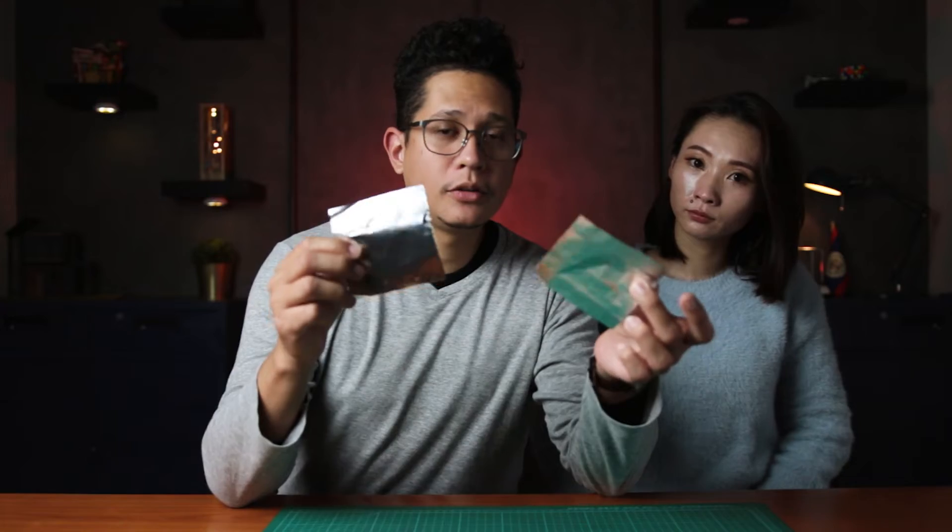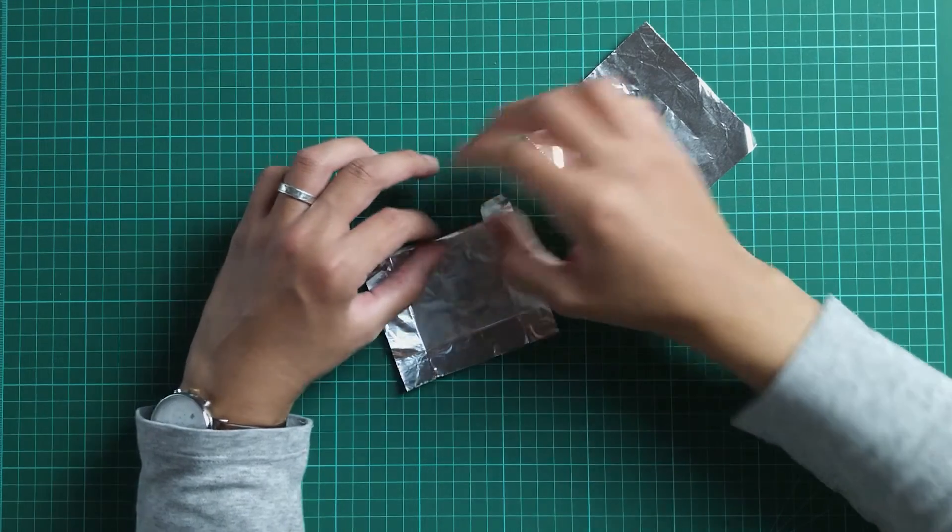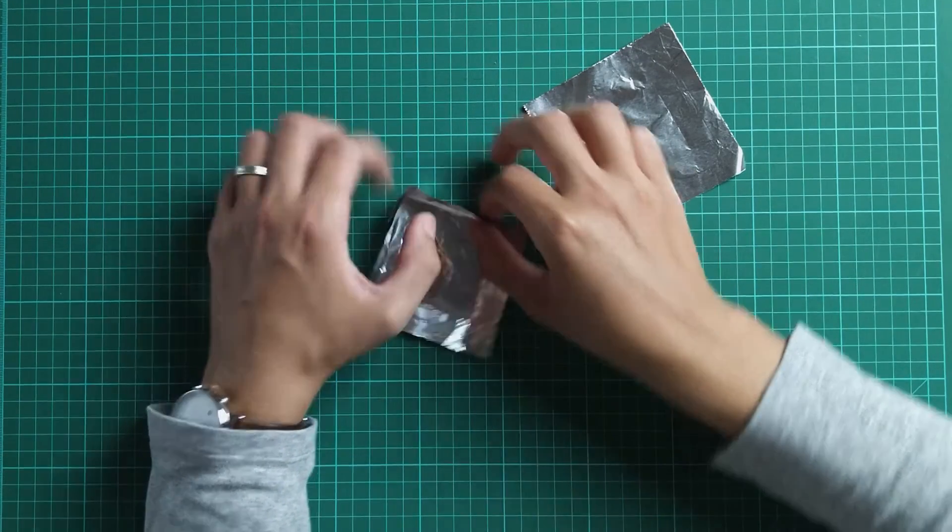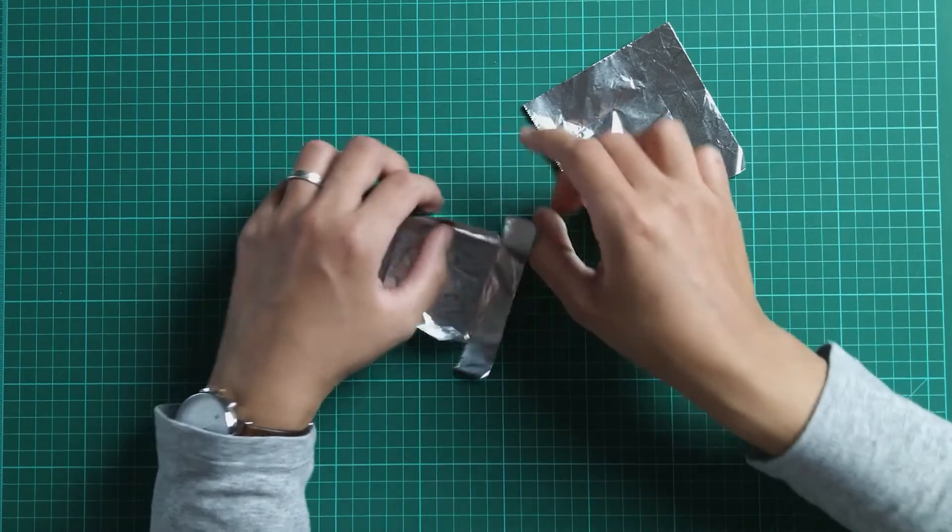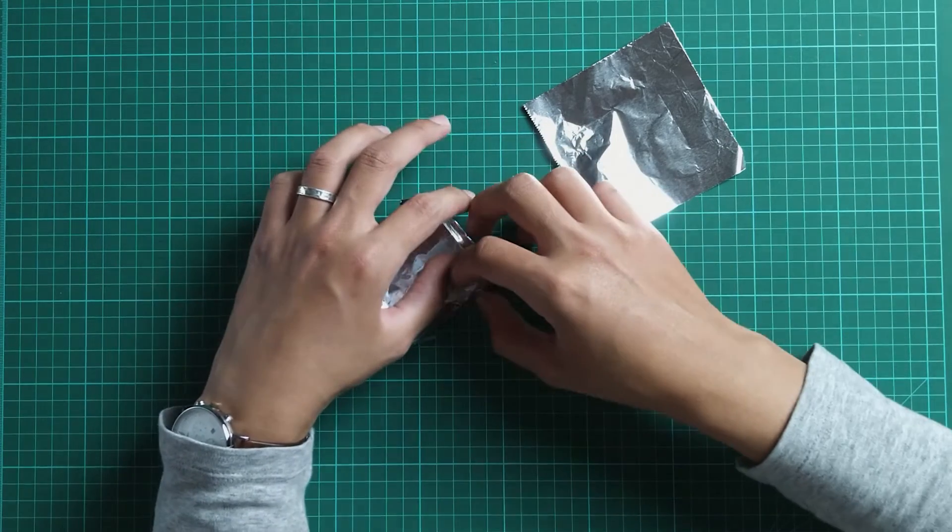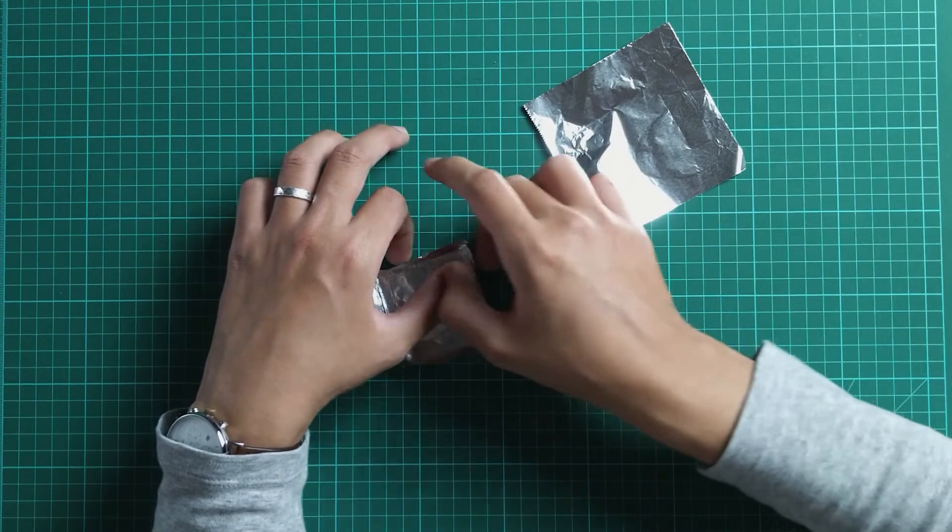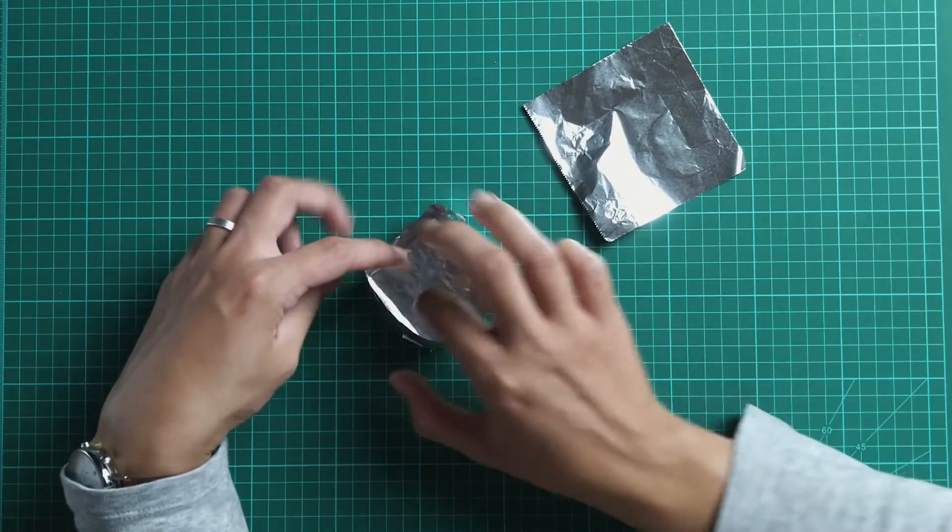I've got two identical pieces of aluminum foil. With the first one, I'm going to carefully try to make a box. There we go.